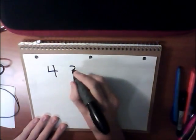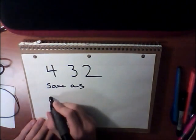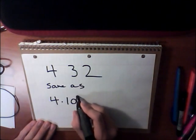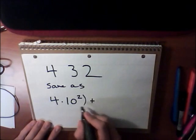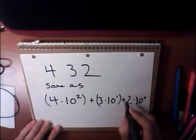We can also represent this by writing it out as 4 times 10 to the second power, plus 3 times 10 to the first power, plus 2 times 10 to the zero power.